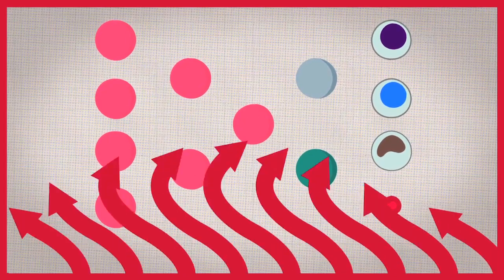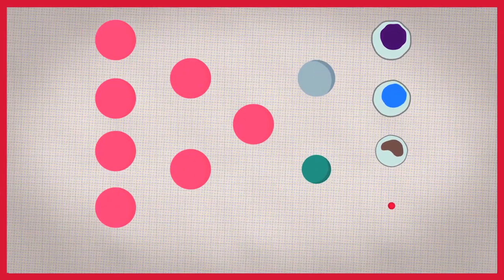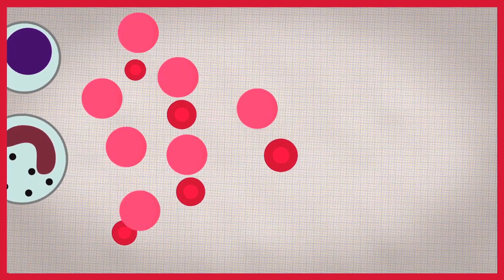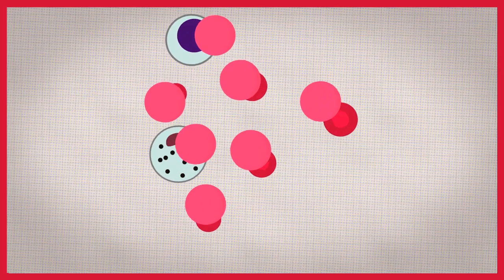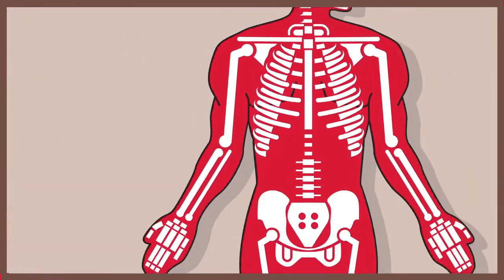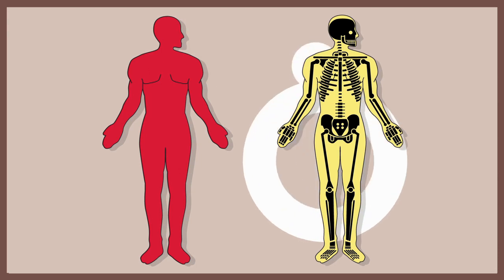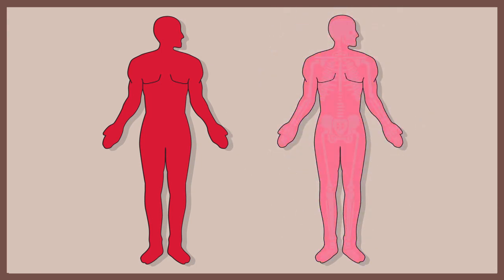Hematopoietic stem cells can regenerate the blood forming system if it is damaged or destroyed. Thus, hematopoietic stem cell transplants can restore blood production in patients with various blood diseases or in patients who have undergone intensive cancer therapy that destroys healthy blood cells along with cancer cells.